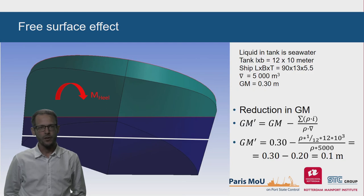As the tank is rectangular, the transverse moment of inertia can be calculated as 1/12 times the length of the tank times the breadth to the third power. We see that the loss in GM is 20 centimeters, reducing GM liquid well below the required 15 centimeters.